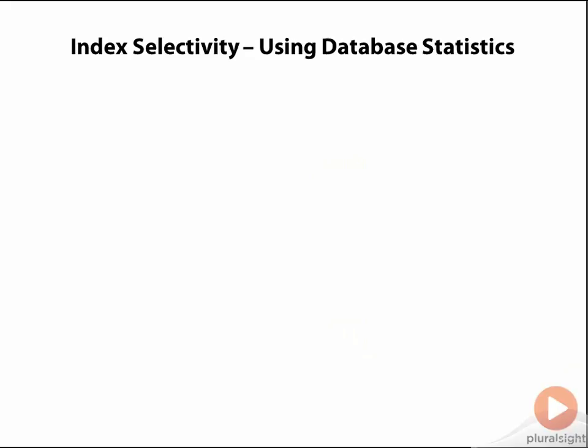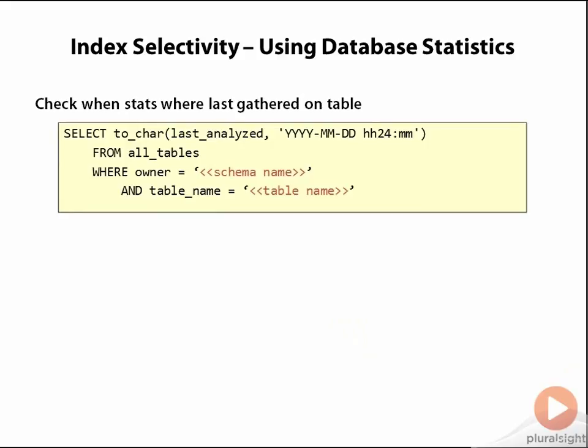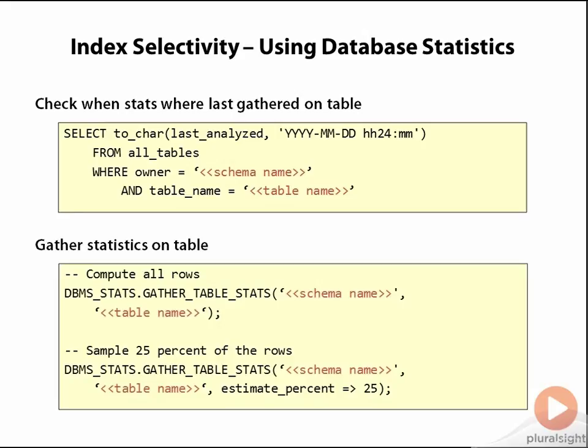If you are interested in looking at the selectivity of multiple columns in a table, you can also do so by looking at the statistics that Oracle has on that table. The first thing you want to do is make sure that statistics for the table are up to date. You can do that by running this query here, which will pull the last analyzed date out of the all_tables view. If you decide it's prudent to regather stats on the table to make sure they're up to date, you'll want to use the DBMS_STATS package in Oracle. I'm showing two ways to call DBMS_STATS here. The first is the simplest form where Oracle will actually compute statistics over all rows in the table — all you need to provide is the owner or schema name of the table and the table name itself.